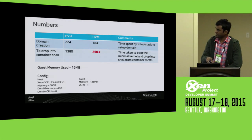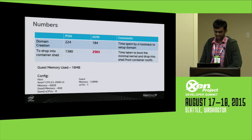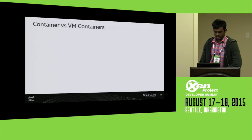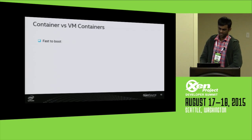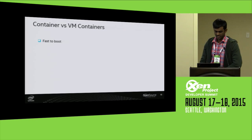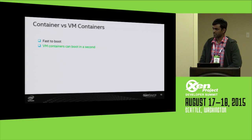We made a small comparison between PVH and HVM — all numbers are in milliseconds. PVH takes around 1.3 seconds to boot, whereas HVM takes around 2.5 seconds because it also has a BIOS to boot. So for the comparison: containers are fast to boot, and VM containers can also boot in about a second. In our case it took a little over a second, but with careful kernel configuration, it could boot within a second.